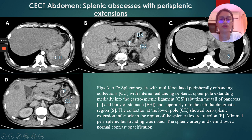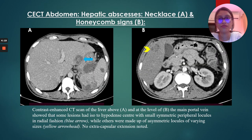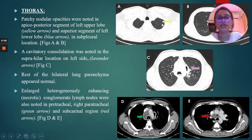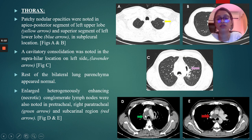There was minimal perisplenic fat stranding noted. The splenic artery and vein showed normal contrast opacification, ruling out thrombosis. CT of the liver at the level of the main portal vein showed lesions with an iso- to hypodense center with small symmetric peripheral locules arranged in a radial fashion, resembling a necklace pattern of hepatic abscess. Another lesion showed asymmetric locules of varying sizes with no extracapsular extension, representing a honeycomb pattern of liver abscess. In the thorax, patchy nodular airspace opacities were seen in the apico-posterior segment of the left upper lobe and the superior segment of the left lower lobe in subpleural location. A cavitatory consolidation was noted in a suprahilar location on the left side. Enlarged, heterogeneously enhancing necrotic lymph nodes were noted in the mediastinum.